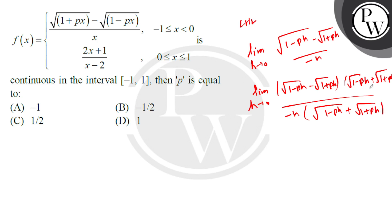Now using the a+b, a-b formula, that is a² - b², so that is (1-px) - (1+px) whole divided by -h times √(1-px) + √(1+px).